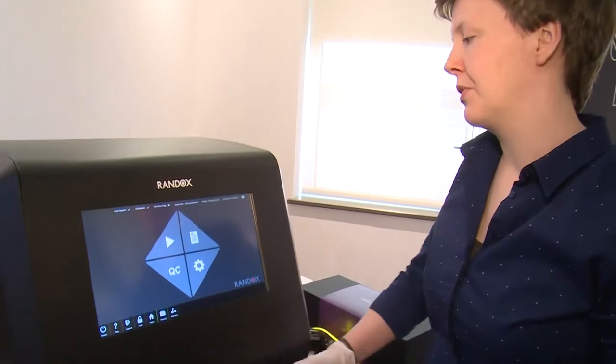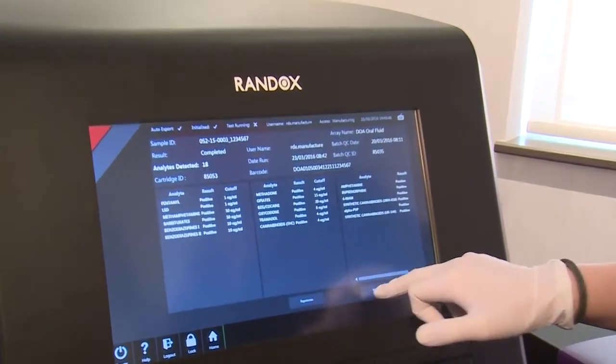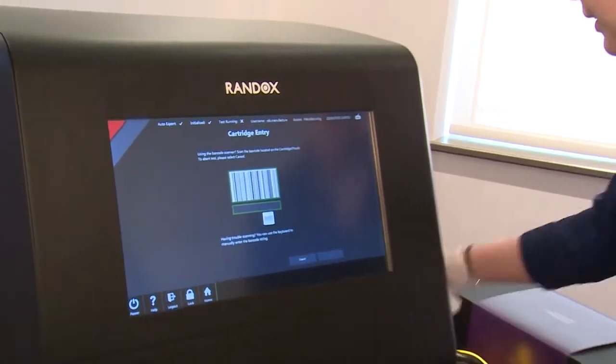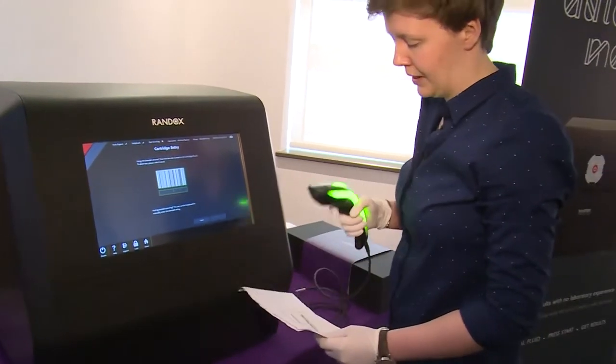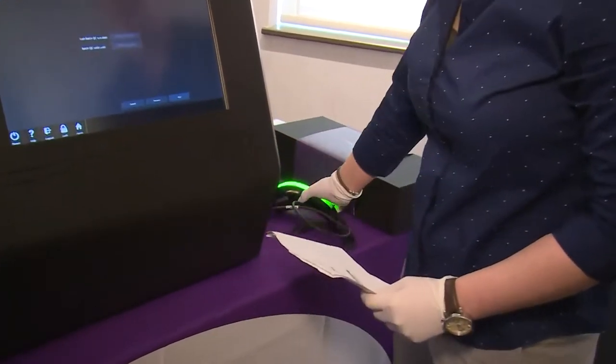On the home screen, press this play button to run a test. That will guide you to enter your barcode. The barcodes come on the cartridge, and we'll scan that to identify it.